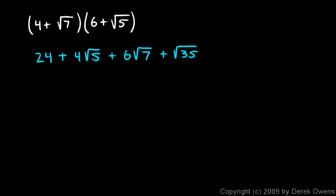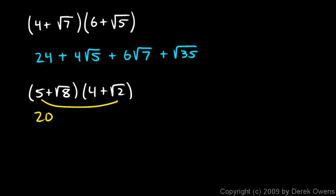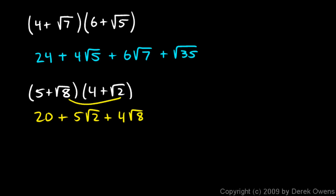Sometimes the results do simplify — like this next example: 5 plus the square root of 8 times 4 plus the square root of 2. Let's do a FOIL operation and watch what we get. 5 times 4 is 20. For my outer two terms I have 5 times the square root of 2. The inner two terms are 4 times the square root of 8. And the last two terms: square root of 8 times square root of 2, which is the square root of 16.